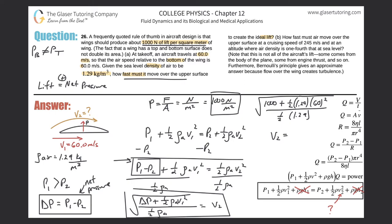So let's do that. So square root of, I'll use parentheses first for the numerator, 1000 plus now 0.5 times 1.29 times 60 squared. Close those parentheses and then divide it by now. Open the parentheses again, 0.5 times 1.29. Close those parentheses and we get about 71.8. 71.8 meters per second.